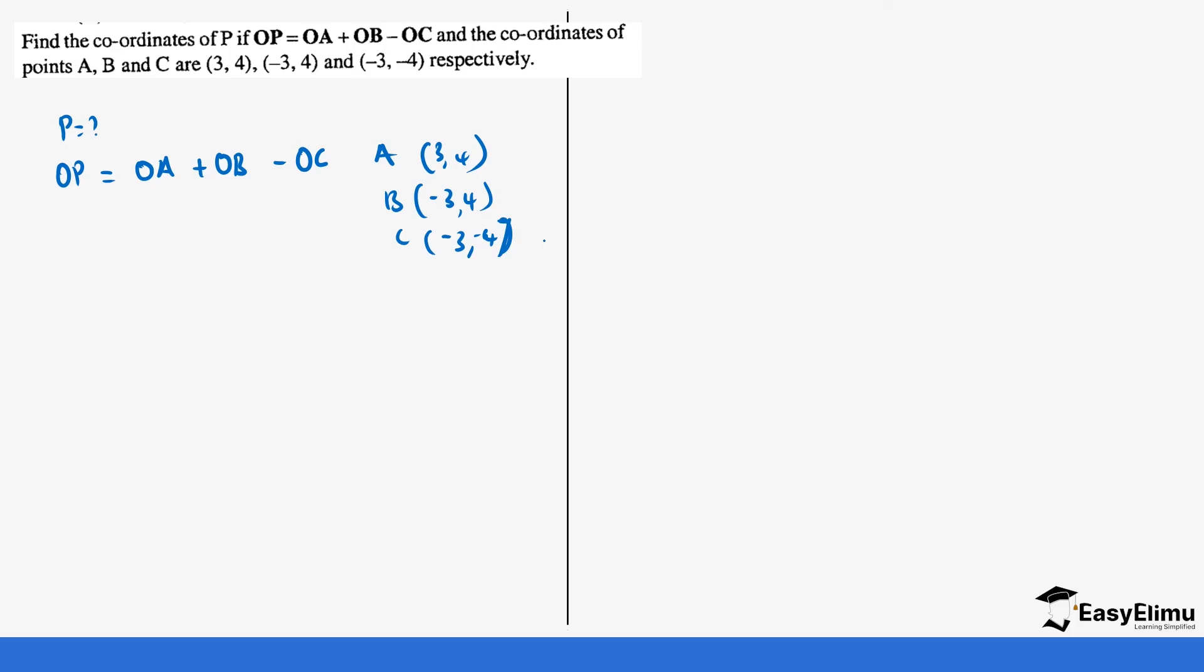So remember what we said previously. If A is (3, 4), our OA is going to be 3 minus 0, 4 minus 0, which is going to give us (3, 4). Our OB is going to be -3 minus 0, 4 minus 0, which is (-3, 4). And then our OC is -3 minus 0, -4 minus 0, which is (-3, -4).